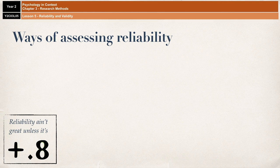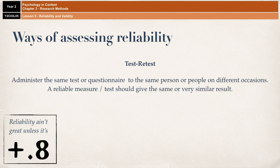The first way of actually assessing reliability is by doing something called a test-retest. It is essentially exactly what the name suggests — you administer the same test or questionnaire to the same person or people on different occasions. A reliable measure or test should give you the same or at least very similar results both times. This method is mostly used with questionnaires or tests like IQ tests, but it can also be used for interviews as well.